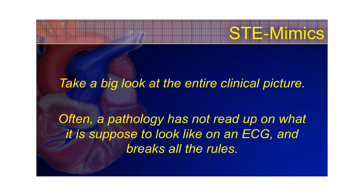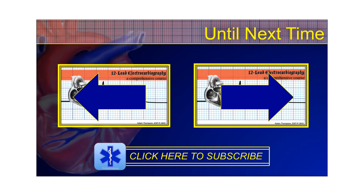In conclusion, when talking about STE mimics, you want to take a look at the entire clinical picture. Often, a pathology has not read up on what it's supposed to look like on an EKG, and it breaks all the rules. The great thing about EKGs is every one of them comes with a patient, so do a good assessment. Don't just get one 12-lead EKG and make a determination — get a trend. Get two, three, or even four or more EKGs while that patient's with you, do it with every set of vital signs, and treat it like a vital sign. That's the end of the discussion on STE mimics — the next video will cover ischemia, injury, and infarct.